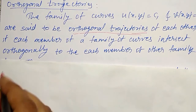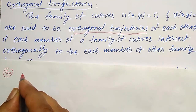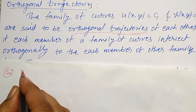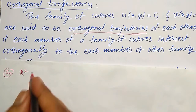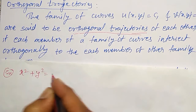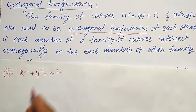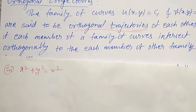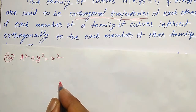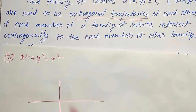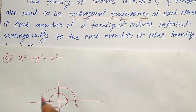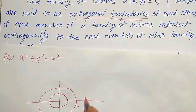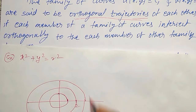For example, consider the family of circles with center at the origin: x² + y² = r². This is the family of circles with center at the origin and having radius r. Depending on r — if r equals 1, radius equals 1; if radius equals 2, the center remains the same; r equals 3, and so on. This set of curves is called a family of curves for the circle.